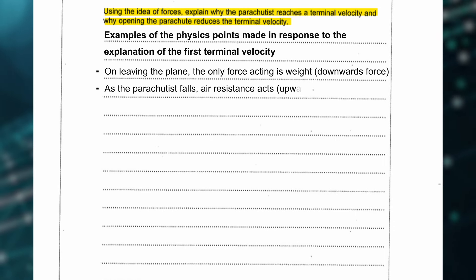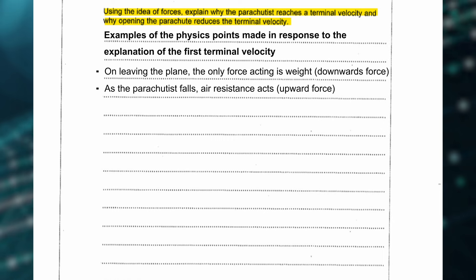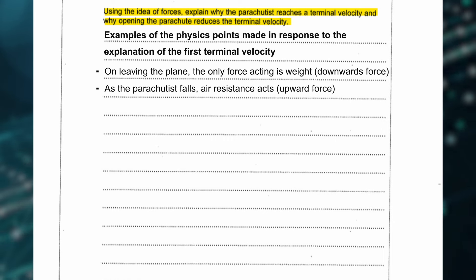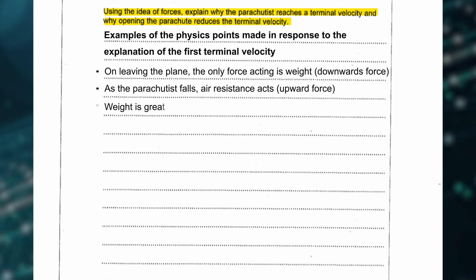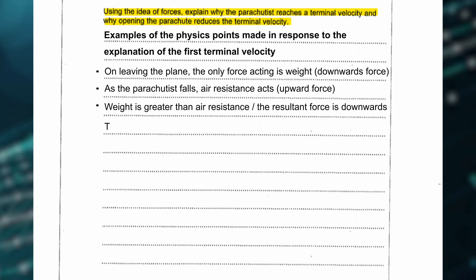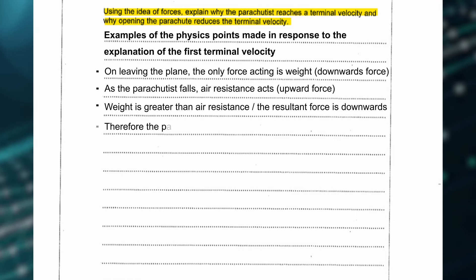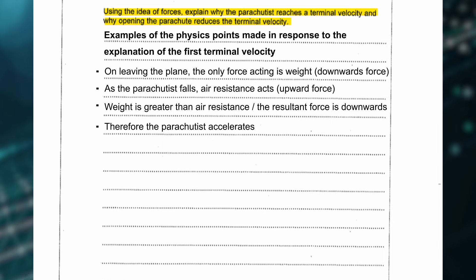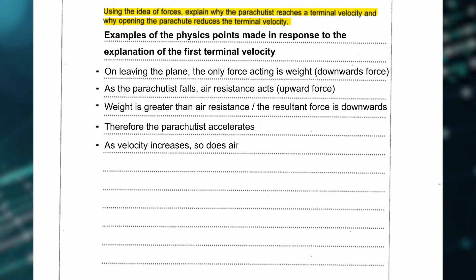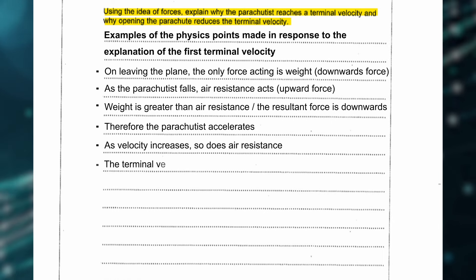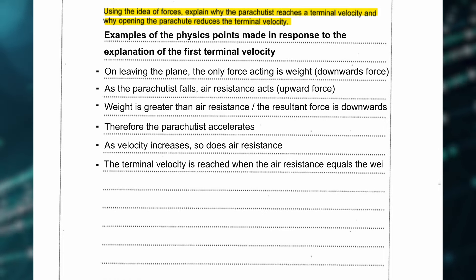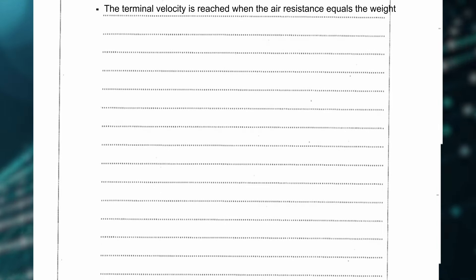As the parachutist falls, air resistance acts as the upwards force. You could then say that weight is greater than air resistance, or that the resultant force is downwards, and therefore the parachutist accelerates. Next, explain how as velocity increases so does air resistance, and that terminal velocity is reached when air resistance equals weight. That's probably the most important point because it brings everything together.